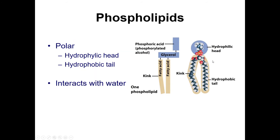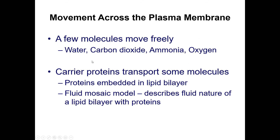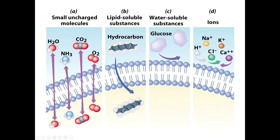Phospholipids are polar, meaning one end is hydrophilic — it can interact with water — and the other end is hydrophobic, meaning it does not interact with water. To move across the plasma membrane, certain molecules are allowed to pass freely, such as water, carbon dioxide, ammonia, and oxygen. Other things, like sugars, need proteins to transport them in, so proteins are embedded in the membrane wall to allow things to move through.